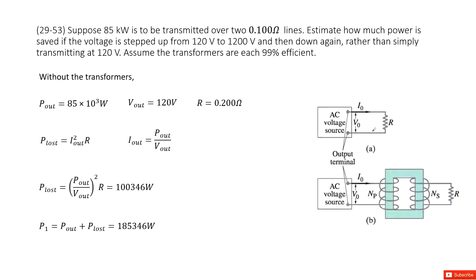So first one, we see we have the power supply, the voltage source, and then it goes through the resistor and then comes back. We know the power output, the LP output, is given as 85 kW, and the voltage output is 120V.